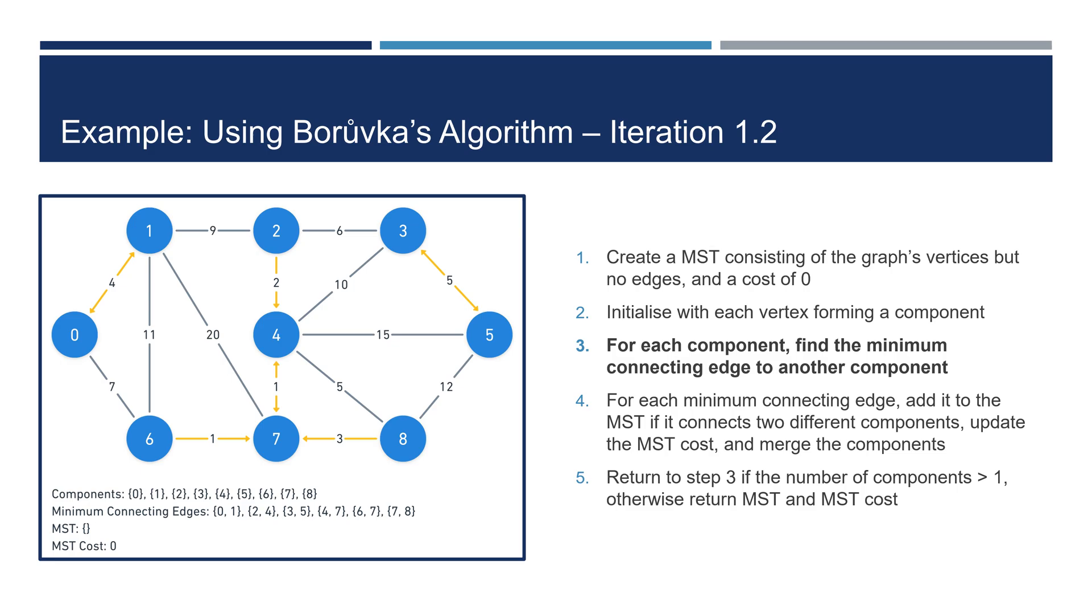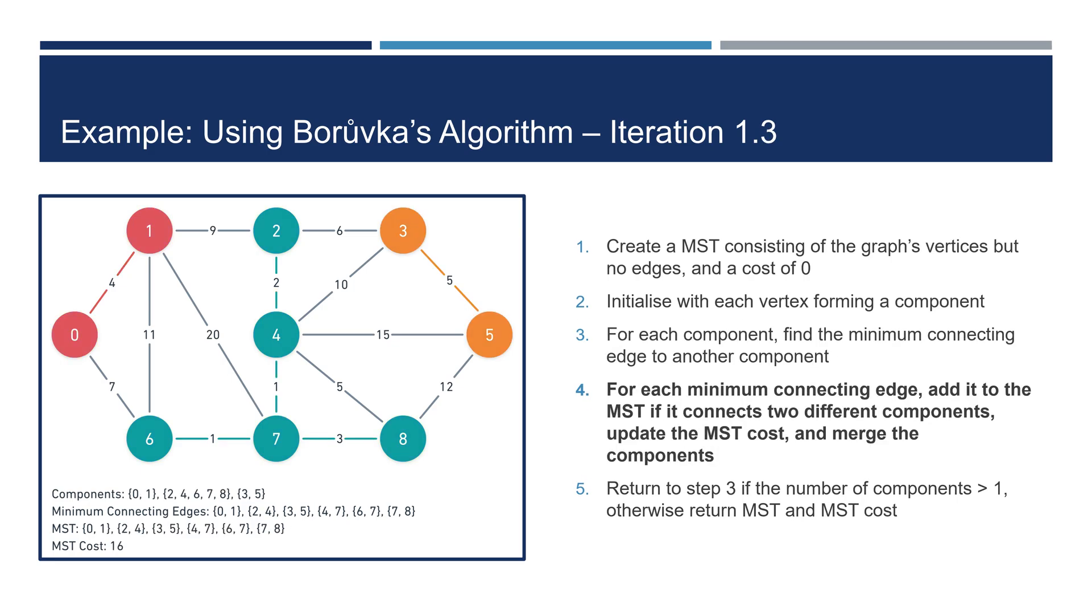When we find a minimum connecting edge, we add it to the list. Next, we go through each minimum connecting edge and add it to the MST if it connects two different components, as well as adding the edge's weight to the MST cost. Then, we merge the components. We've color-coded the graph to group nodes in the same component. This shows that the number of components reduced from 9 to 3.